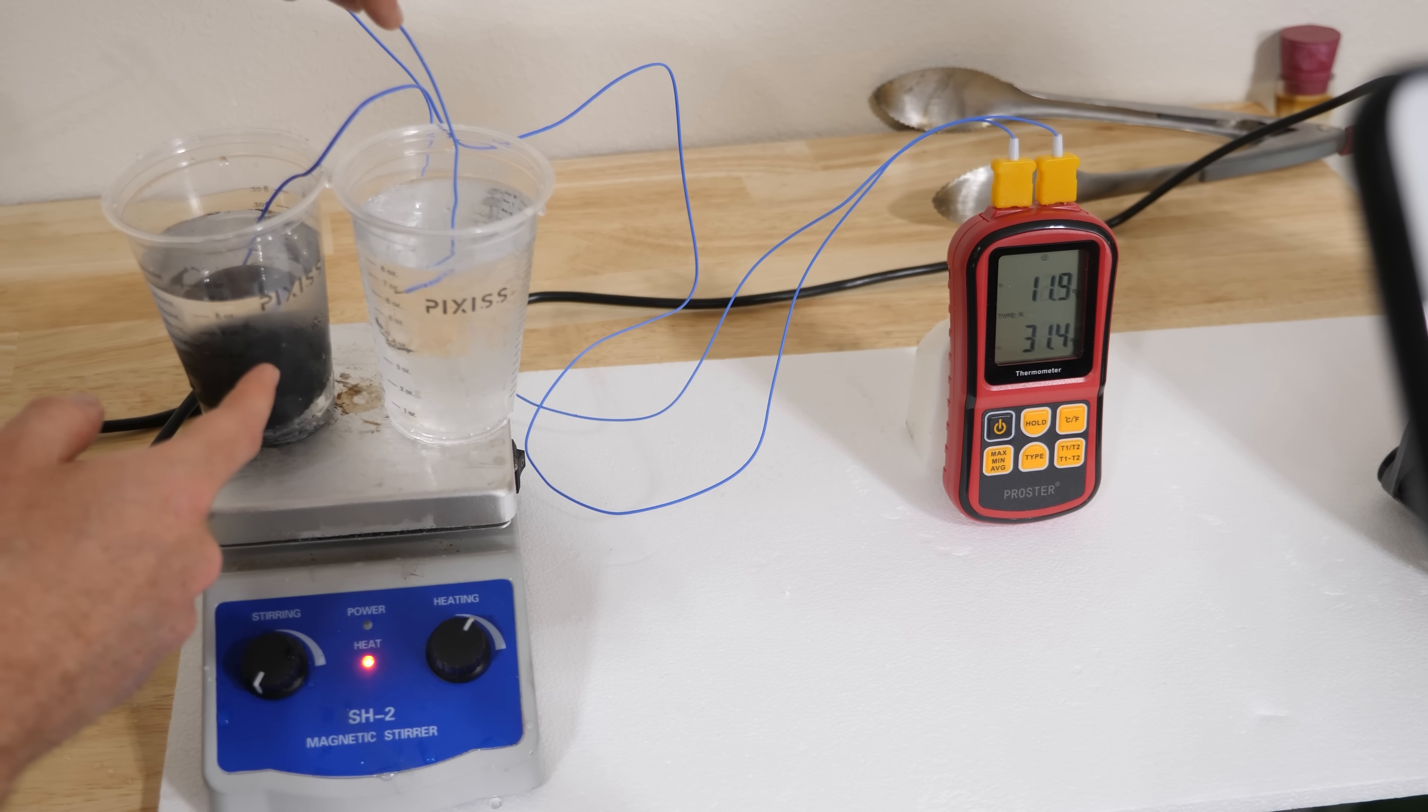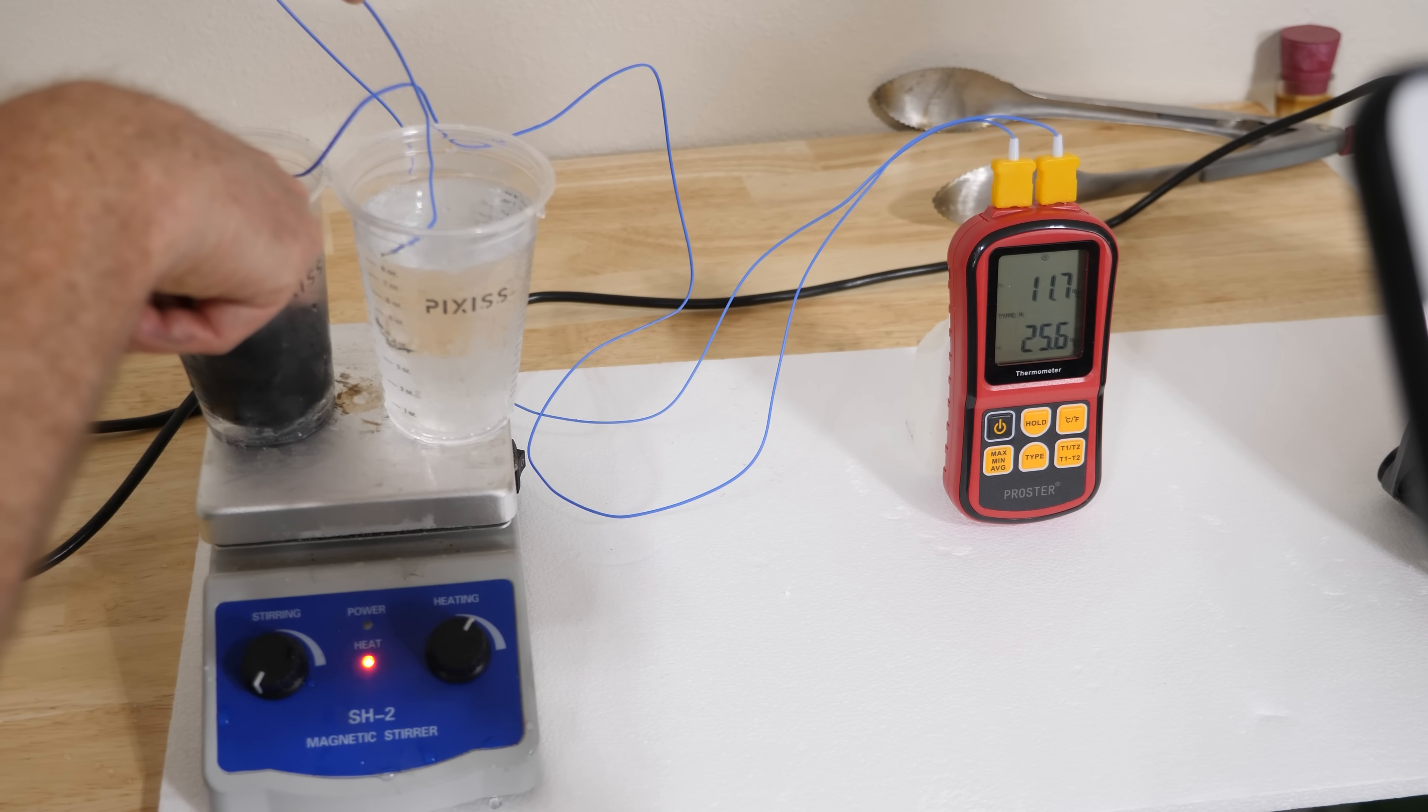So we've got 11 degree water here and 32 degree water here. This is pretty amazing to see in a real experiment how good ice is at keeping things cold. We had to use 4.5 times the mass of iron and even cool it to liquid nitrogen temperatures. And in the end, the ice still won.